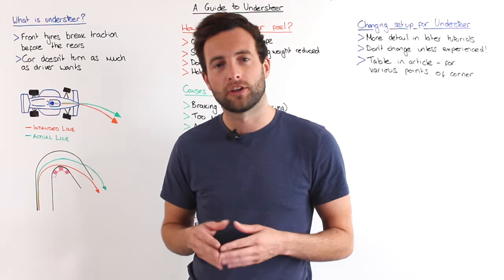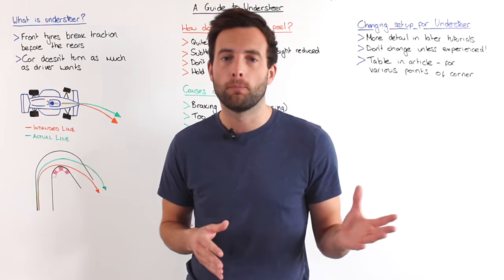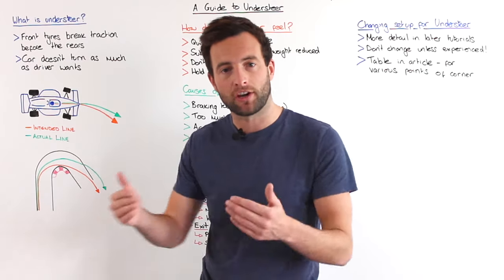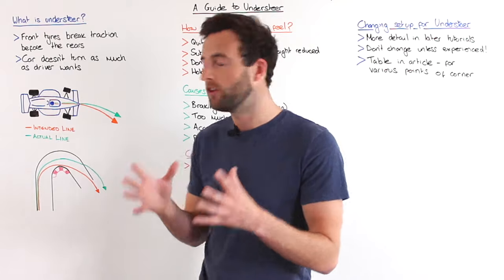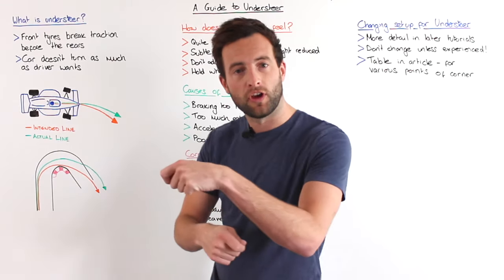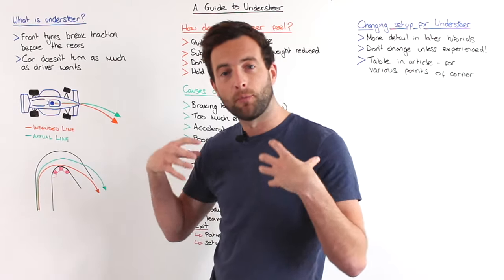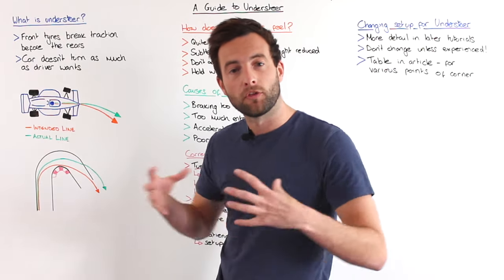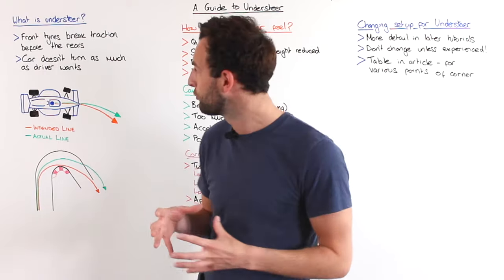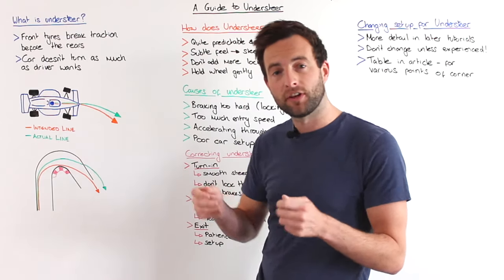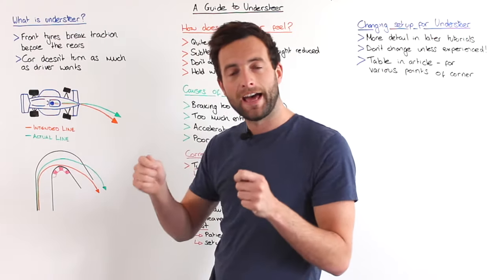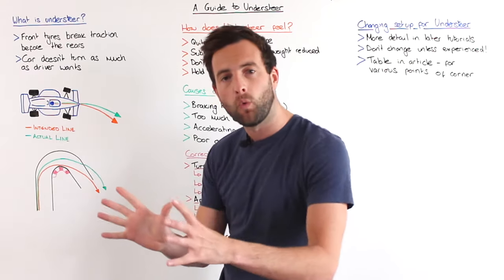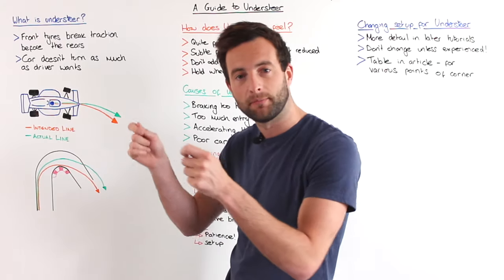First of all we're going to take a look at the definition of understeer, or 'push' as you may call it in the US. Understeer is when the front tyres break traction before the rear tyres. You go to turn the car into the corner and we are front-limited — the front tyres are sliding across the circuit while the rear tyres remain in full grip. As a driver, the car won't follow the path you want; it will push wider than your intended steering input.